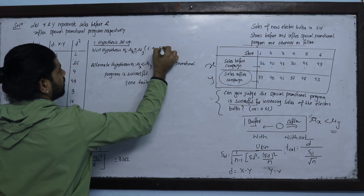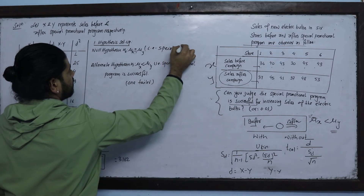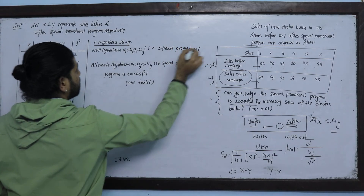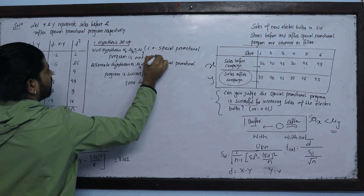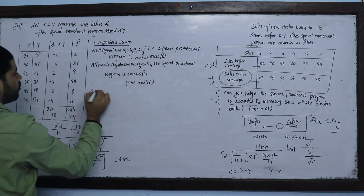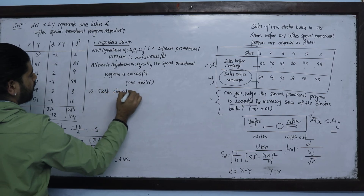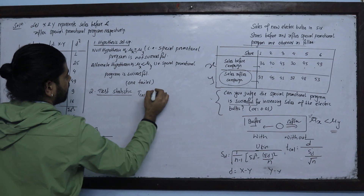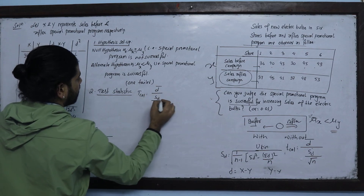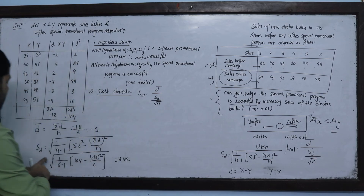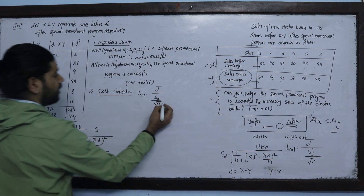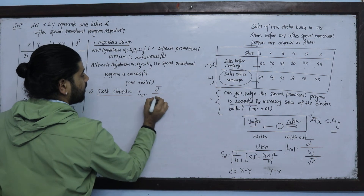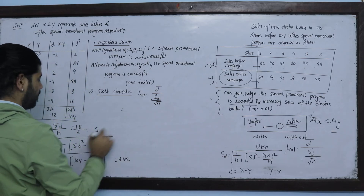The null hypothesis is that the special promotional program is not successful — sales are not increased. This is the test statistic: T calculated = d-bar upon SD upon root n. We already have the unbiased standard deviation, using n minus 1. Now d-bar is minus 3.